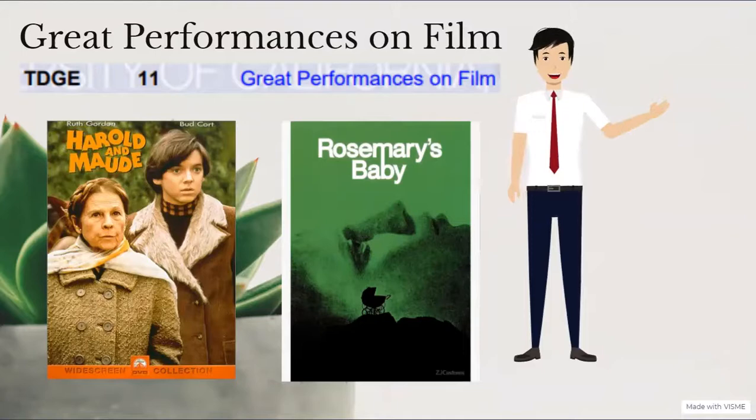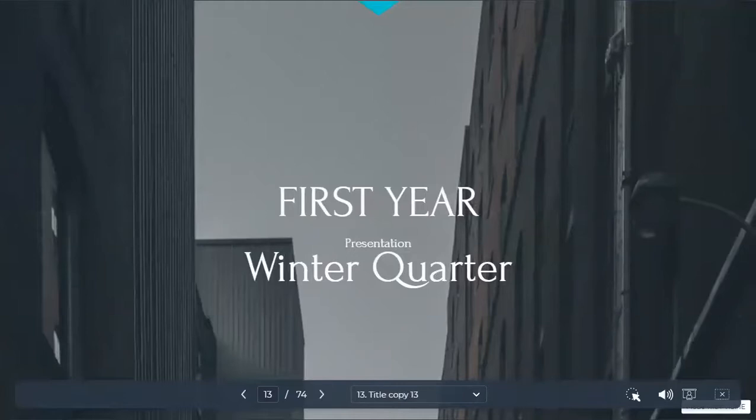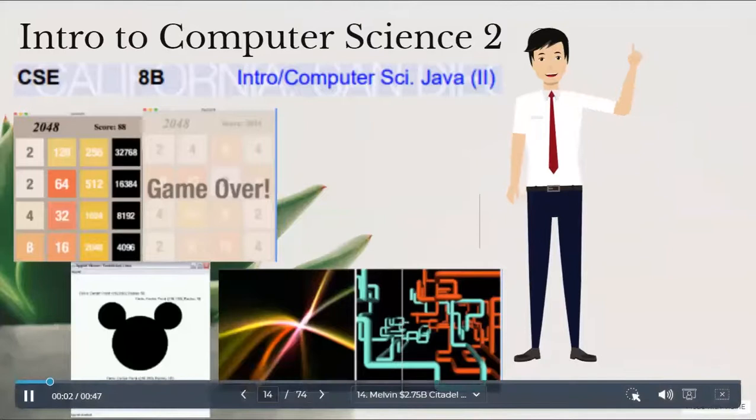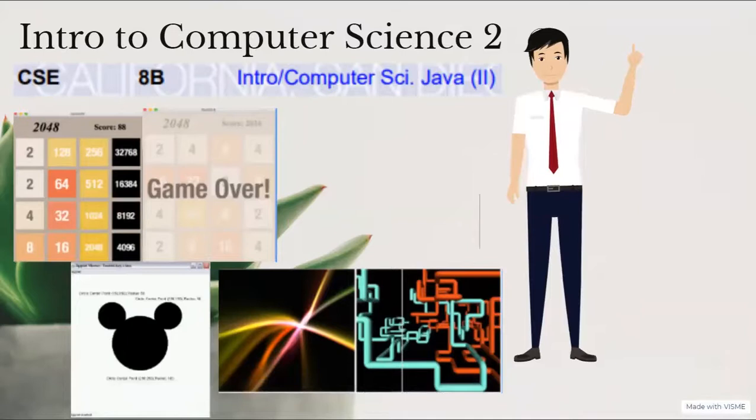So in winter quarter, I took three classes. I took Intro to Computer Science 2. This course builds on basic programming constructs to introduce class design and use, interfaces, basic class hierarchies, recursion, and file I/O. It also taught development, testing, and debugging in more complex programs. Some of the projects I worked on were to build a replica of 2048, draw various shapes such as a Mickey Mouse head, and create your own screensavers. This course helped me further develop the basics of Java programming.